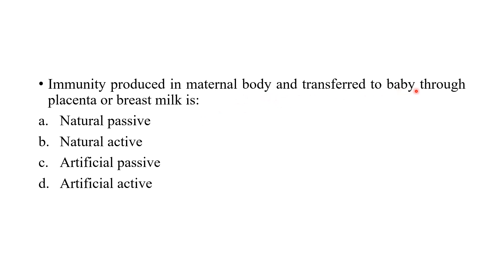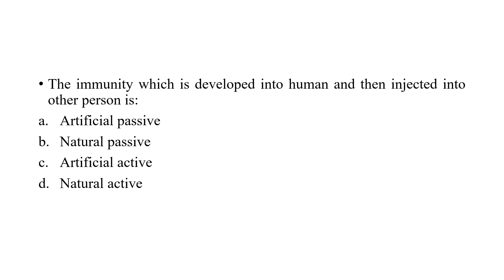Immunity produced in the maternal body and transferred to the baby through the placenta or breast milk — the baby receives it passively and it is naturally introduced, so this is natural passive immunity. Immunity which is developed in one human and then injected into another person — inject from another source, artificial and passive — the answer is artificial passive immunity. Option A is the correct answer.